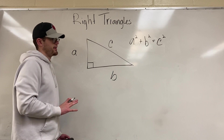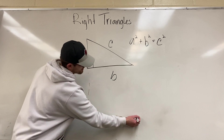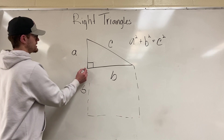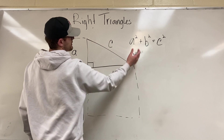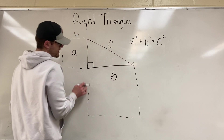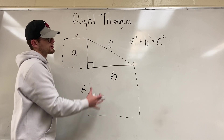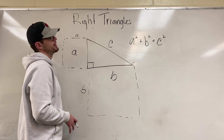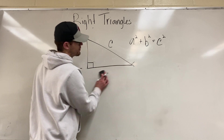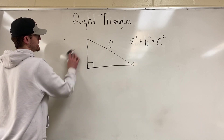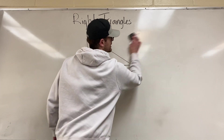There is a really fun geometric proof on this where you draw big squares — one that's c by c, one b by b, one a by a. For the sake of this video, we're just going to move into the math and show some different ways you can use the Pythagorean theorem to solve for different sides.